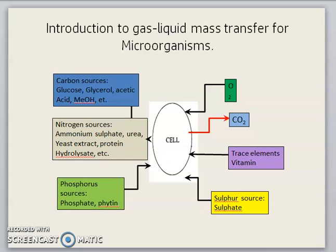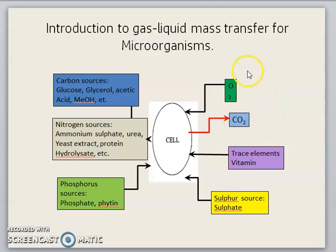This diagram shows a typical gas-liquid mass transfer for a microorganism. We know that the cell requires carbon sources, nitrogen sources, as well as phosphorus sources. It will produce carbon dioxide and also H2O. Cells also require O2 and trace elements such as vitamins and sulfur sources. A fermentation media may consist of all these elements in order for the cell to grow.